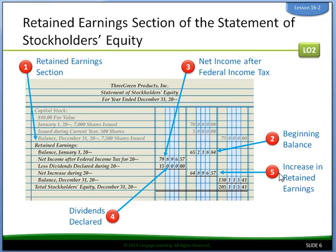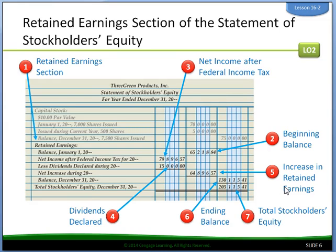Then we subtract those two: $79,000 less $15,000, and we have our increase in retained earnings. Add the beginning balance of retained earnings, $65,000, and the increase in retained earnings, $64,000. Adding these two together we get $130,115.41. Then we add that together with the $75,000 and we get the total stockholders equity.